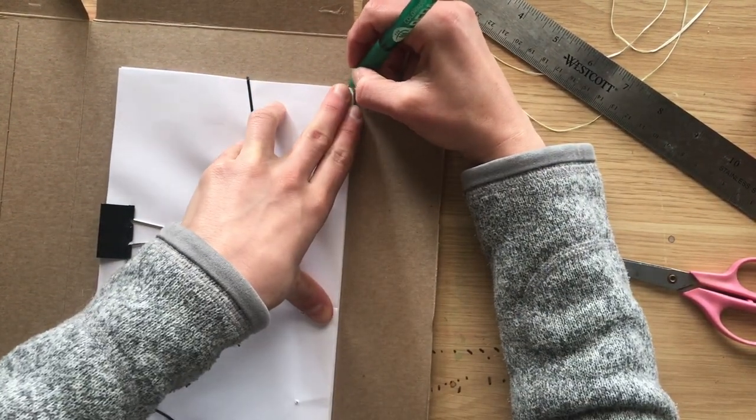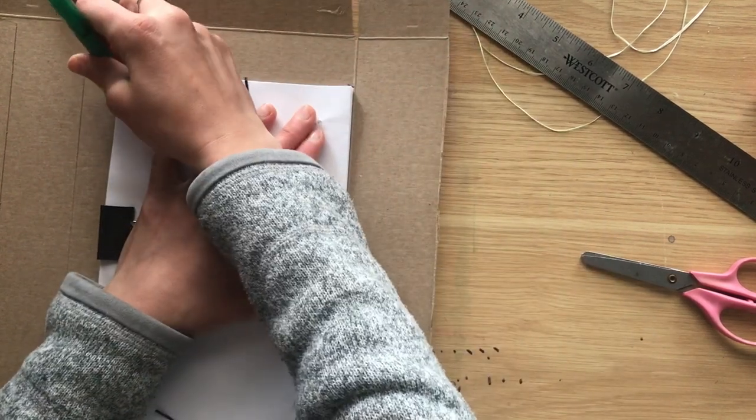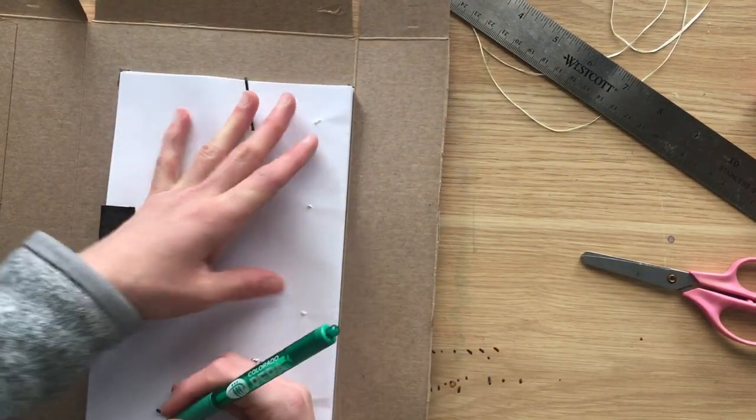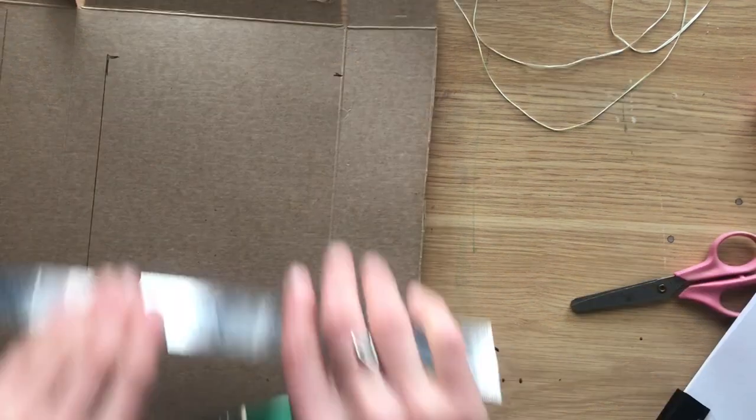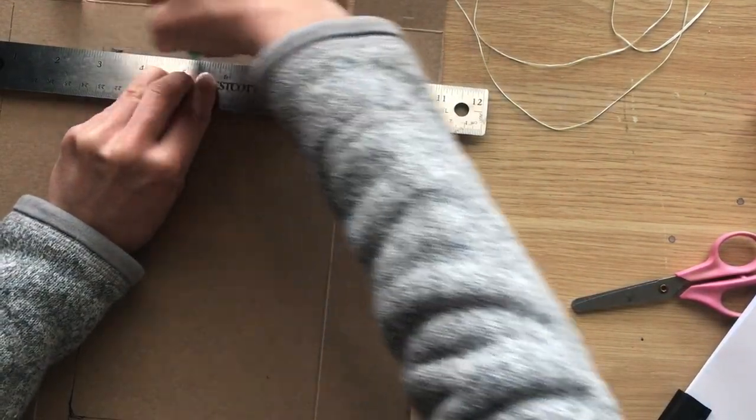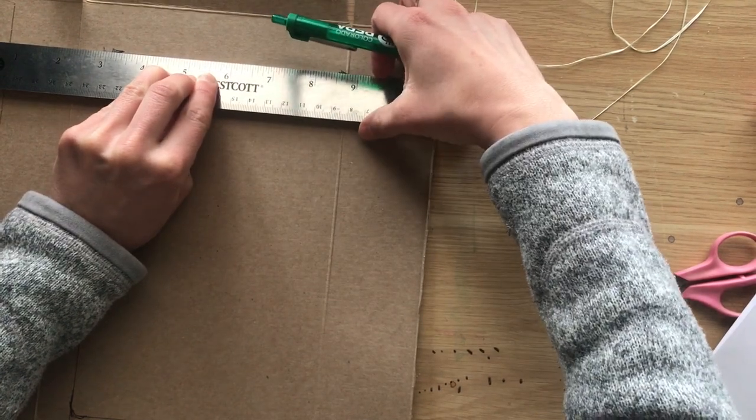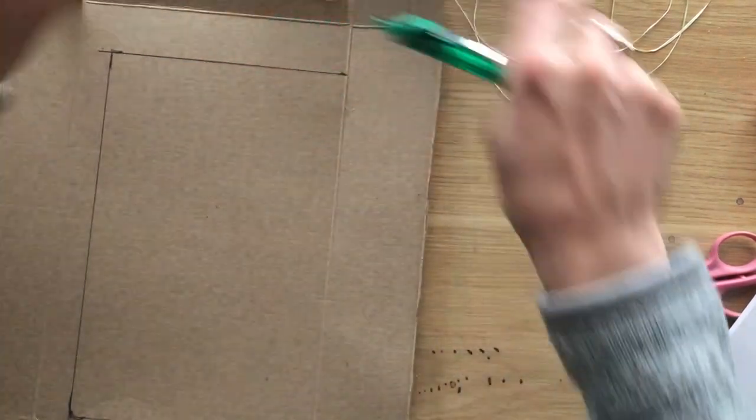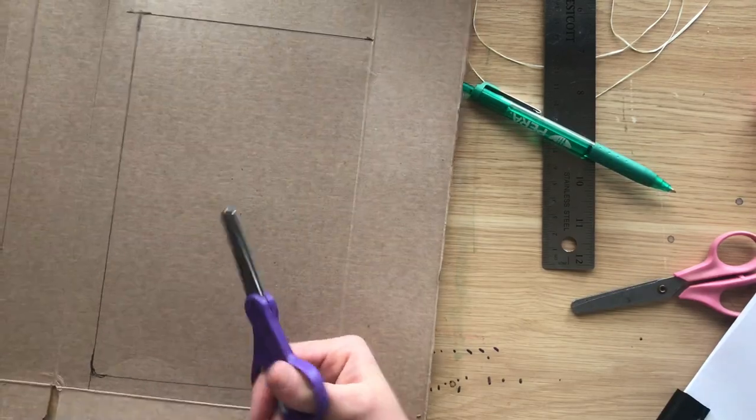So using your book as a template, either trace right around it or draw tick marks where each corner is so that you can use your ruler to draw between those tick marks to create a rectangle that is the same size as your book. And of course, you want to do this twice because you need a front and a back cover.